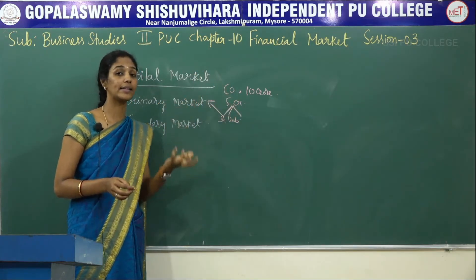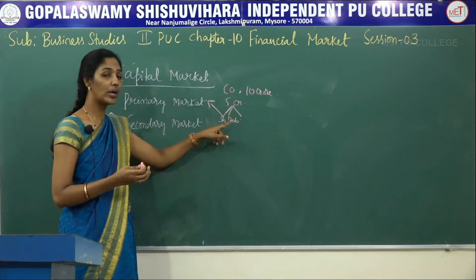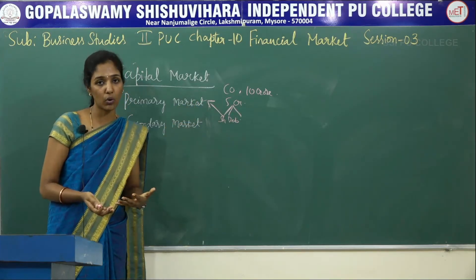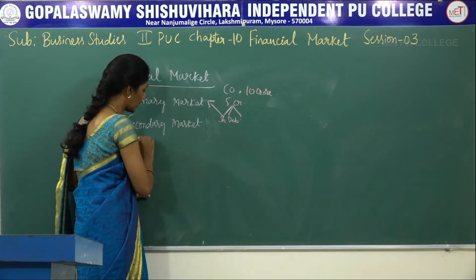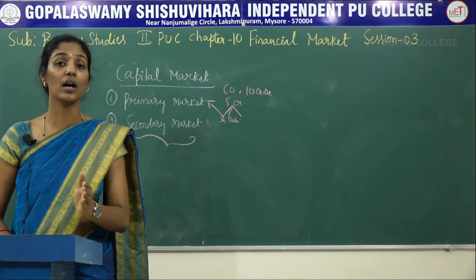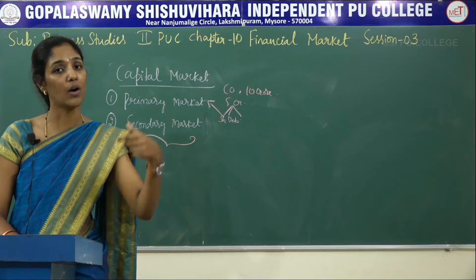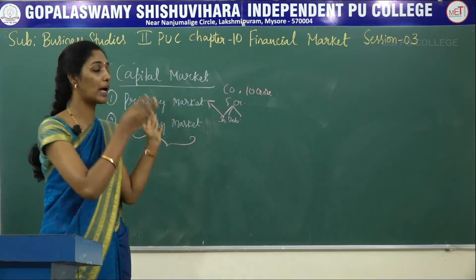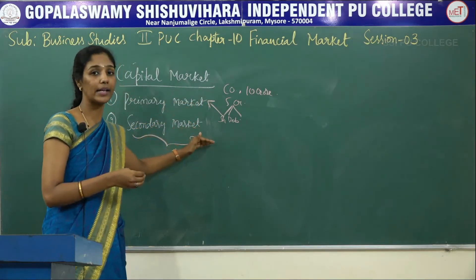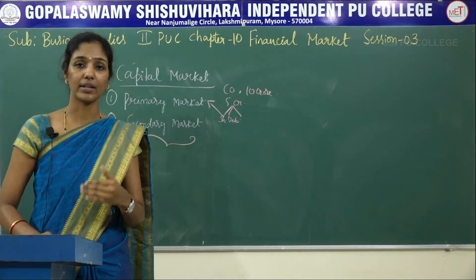With the help of the primary market, a new company can raise its required finance through issue of shares or debentures to the general public. The public who purchases the shares in the primary market can later sell them, and that sale takes place only in the secondary market, where securities are sold by existing investors to other investors.